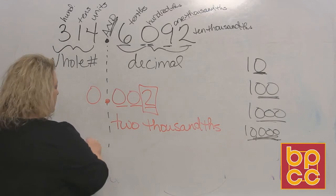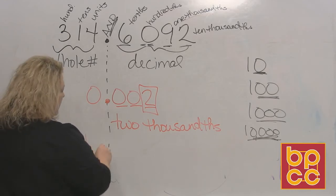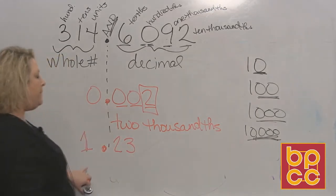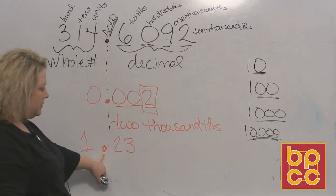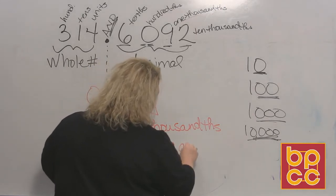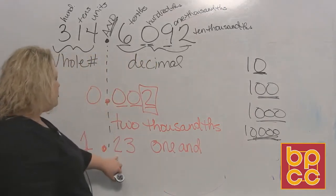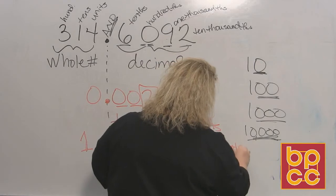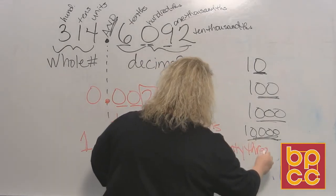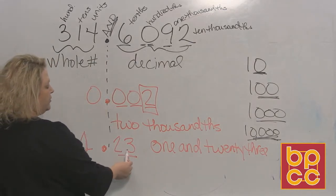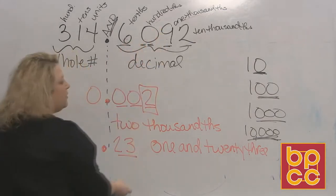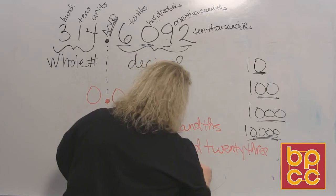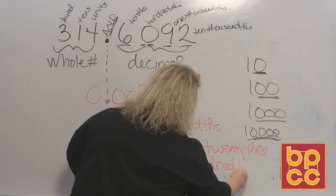The other example: one point two three. This says 'one and' — and you would actually write the word 'and.' Twenty-three, because these are non-zero digits so you write both. How many places is it behind the decimal? One, two — two places up here is hundredths, because the number one hundred has two zeros. So it's one and twenty-three hundredths, T-H-S.